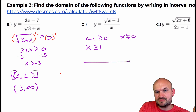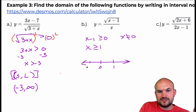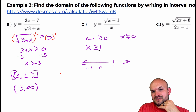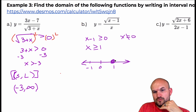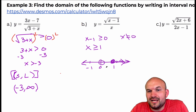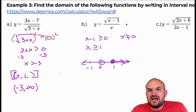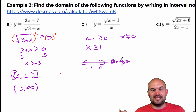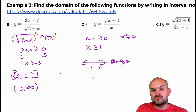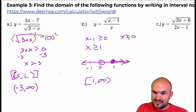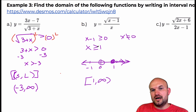I'll use a number line to explain this. Here's negative one, zero, and one. The domain requires x to be greater than or equal to one, so all numbers going to the right from one. And x cannot equal zero — but that doesn't matter because anything between zero and one is not in the domain anyway. The domain is only from one to infinity. Using a number line makes this visually clear. So my domain here is [1, ∞), where one is included because it's greater than or equal to.